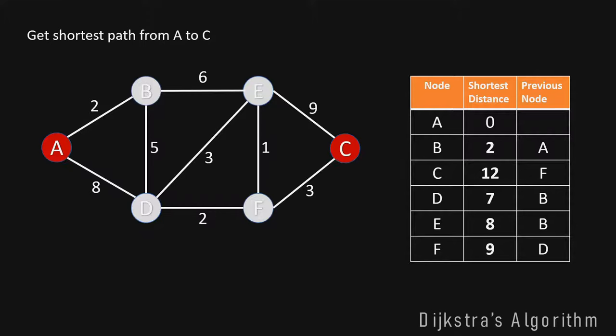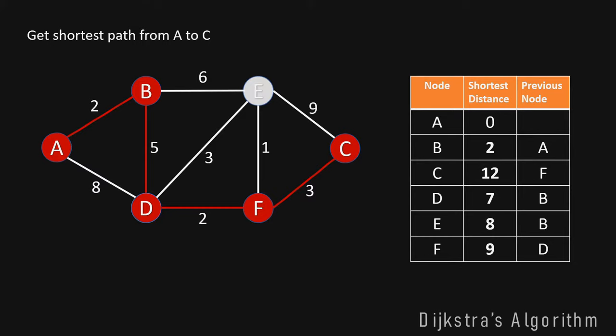For example, to reconstruct the path from A to C: the shortest distance is 12. We start at C, look at its previous node which is F, then look at F whose previous node is D, then D whose previous node is B, then B whose previous node is A. We have now found the shortest path A → B → D → F → C with a total length of 12.